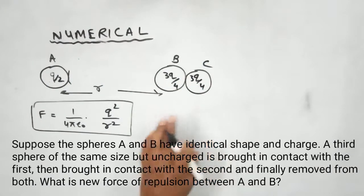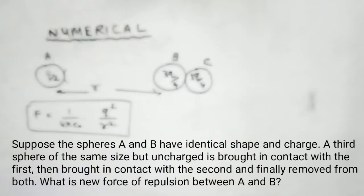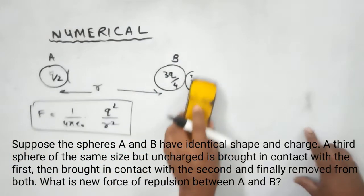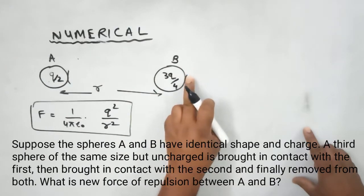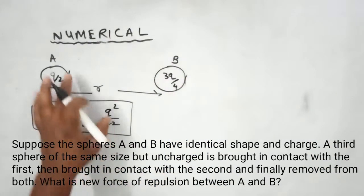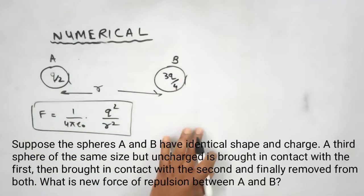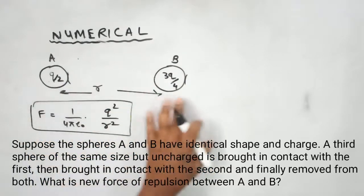Now sphere C is removed. The final condition has new charges: A has Q by 2 and B has 3Q by 4. Now you have to find what the new force will be - whether it will be the same as before or it will change.